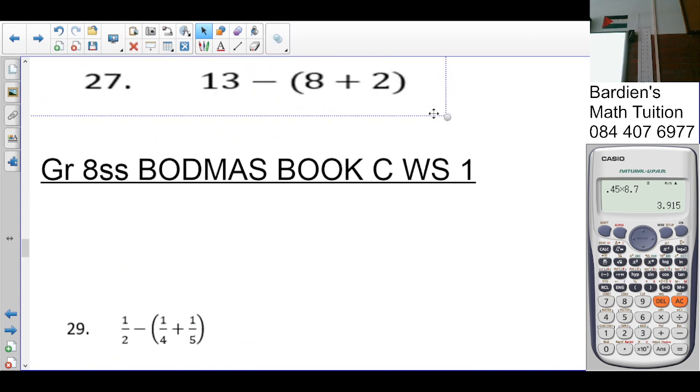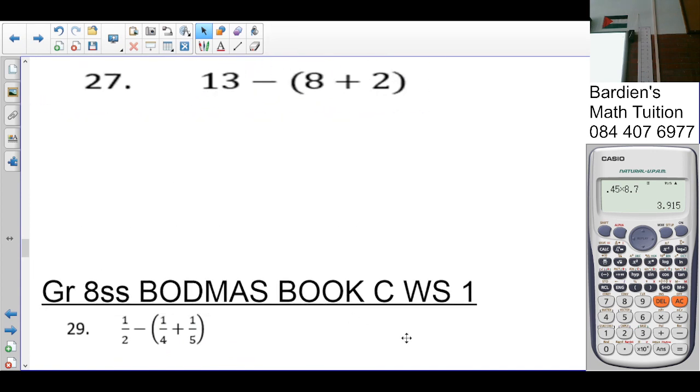Twenty-seven. What needs to be done first? Brackets. That's simply going to give you thirteen minus three. Okay. I don't need a bracket. Thirty minus ten is twenty. Last one.